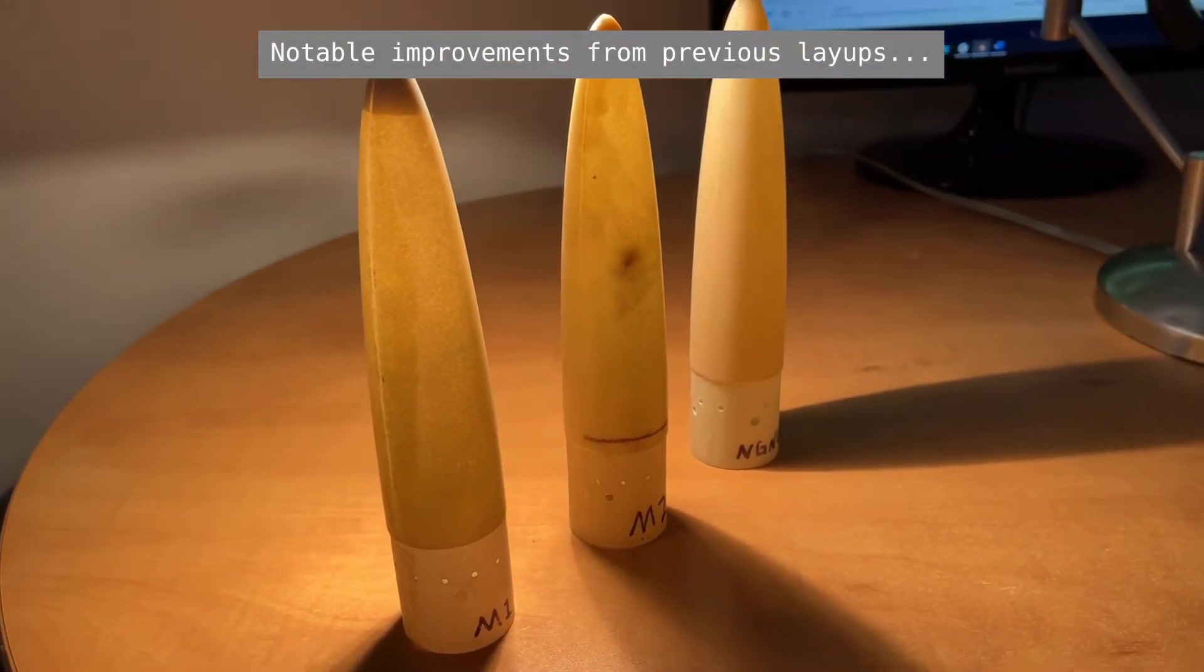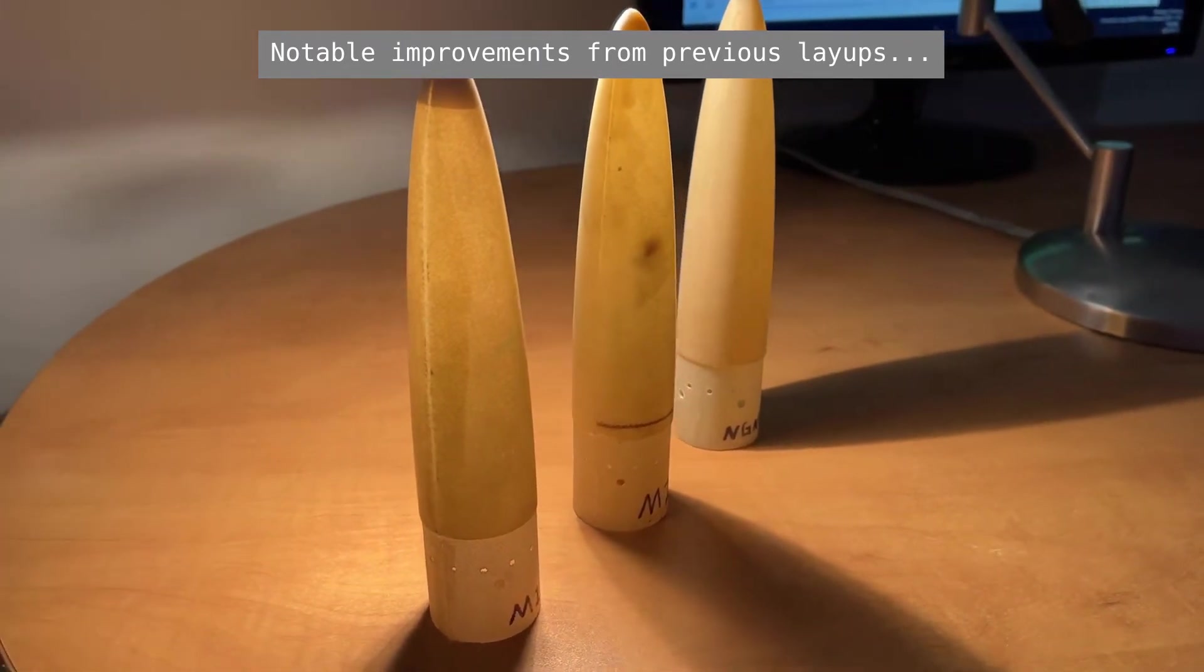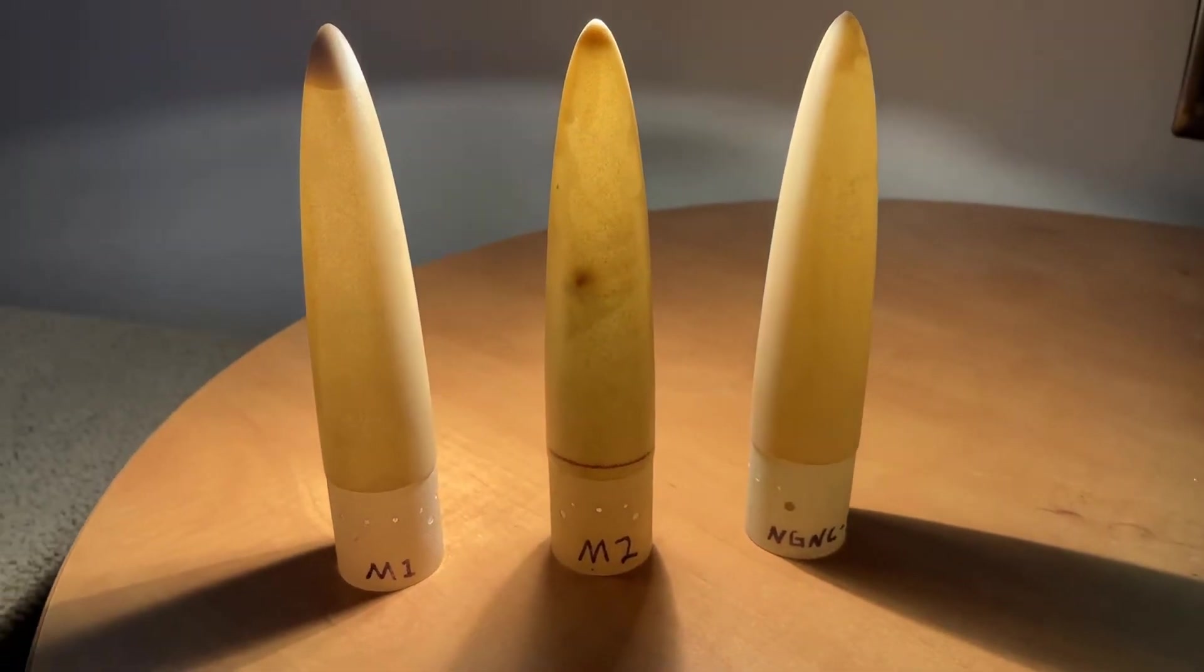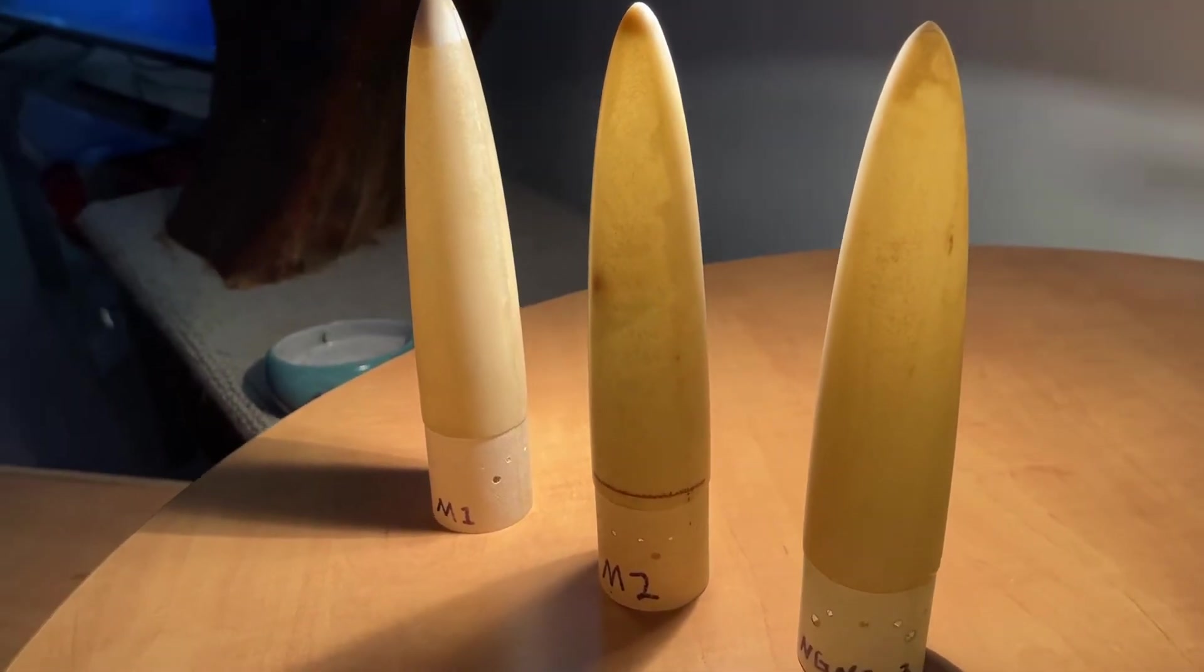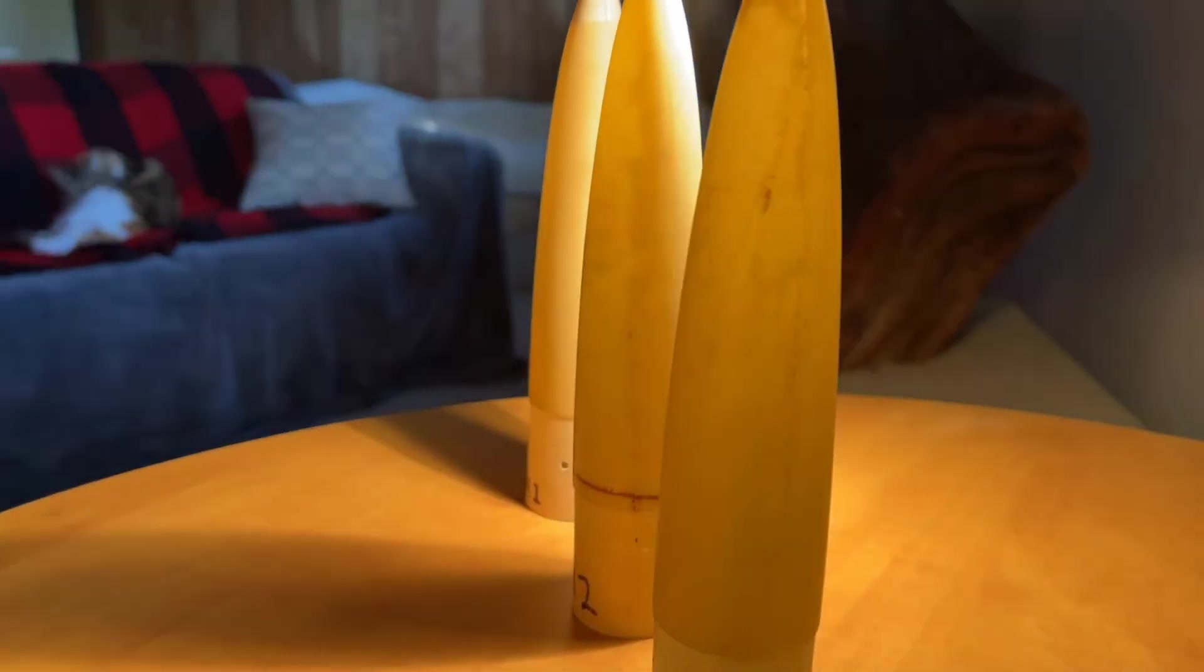Here are some notable improvements from the previous layups. Number one, flow throughout the layers was much better as the vacuum pressure was improved along the inside, as opposed to before when the cone was just stuffed with cotton. Number two, the wings near the tip weren't perfect, but they were significantly better than the last layup. The seams can be seen to be a lot closer and tighter.